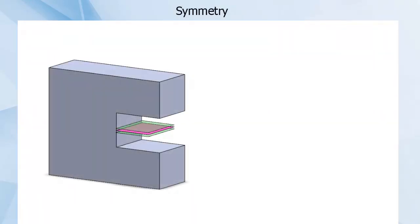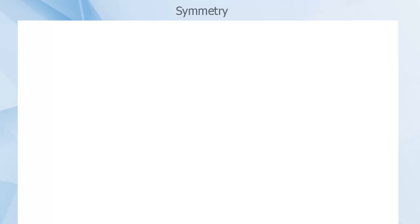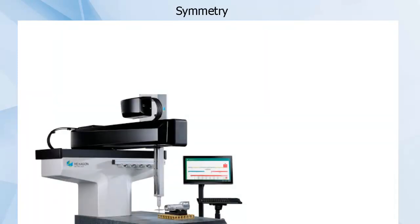Just as with concentricity, symmetry is a control that is difficult to measure, requiring the calculation of as many midpoints as is realistic for a given cross-section, and then again for as many cross-sections as is realistic. These median points then need to be compared to a derived datum. This process is typically only practical to do with a Coordinate Measuring Machine, or CMM, which is a high-precision 3D scanner.